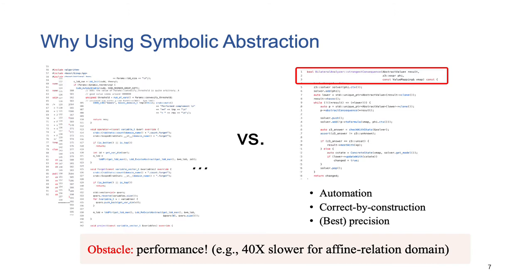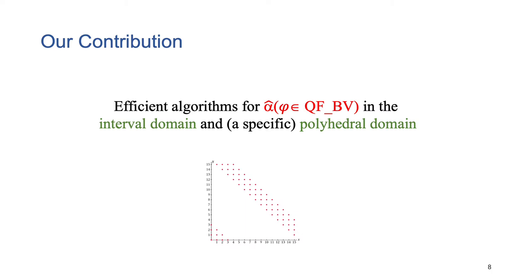However, a major obstacle to adoption is the performance problem. In this work, we propose two efficient algorithms for symbolic abstraction of quantifier-free bit-vector formulas, which apply to the interval domain and a specific polyhedral domain, respectively.